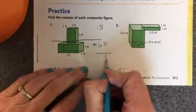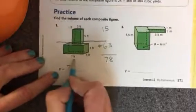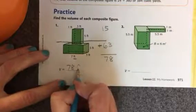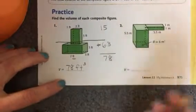So I'll add them and I have 78. And then I'll look at my label to see, oh, this is cubic feet. So I'll write feet cubed or cubic feet.